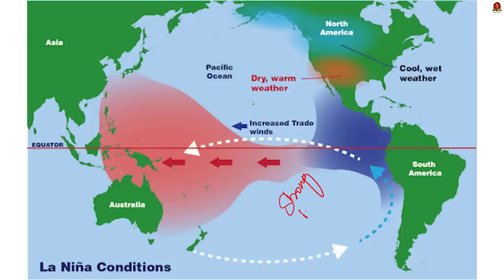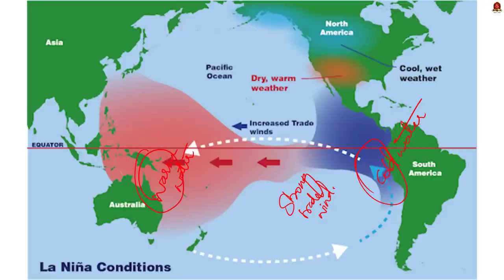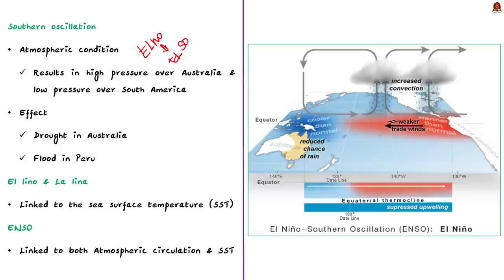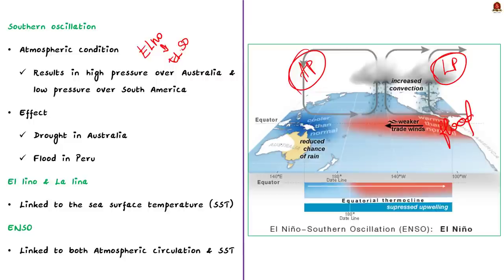La Niña is the opposite phenomenon. During La Niña years, trade winds are usually stronger, helping accumulate warm sea water on the eastern coast of Australia, which results in cold water accumulation near western South America — the Peruvian coast. La Niña normally brings excess rainfall to Australia due to the excess accumulation of warm water near its coast. The complementary atmospheric phenomenon is ENSO — El Niño South Oscillation — where high pressure is reported in Australia and low pressure in South America, resulting in drought in Australia and flooding on the Peruvian coast.